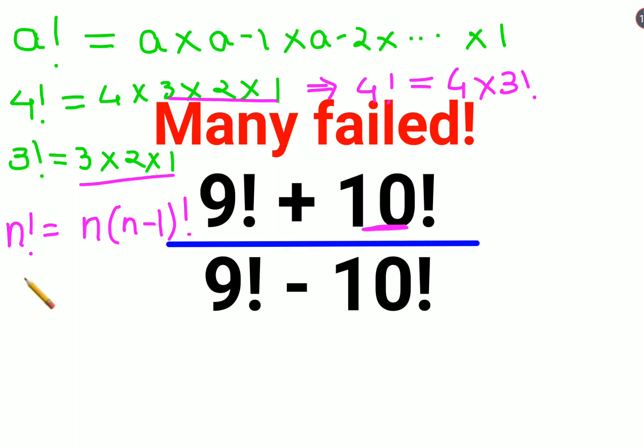From here, I can say 10 factorial can be written as 10 into 10 minus 1, which is 9 factorial.